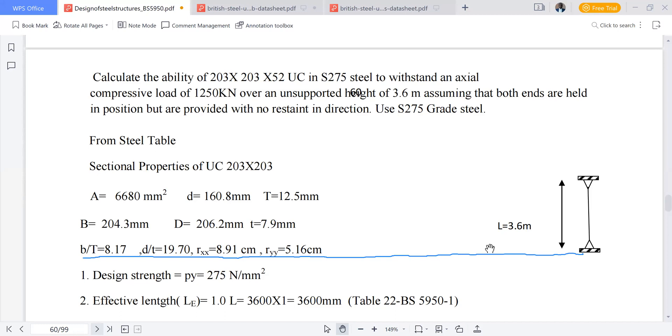Calculate the ability of a universal column in S275 steel to withstand an axial compressive load of 1250 kilonewtons over a supported height of 3.6 meters, assuming that both ends are held in position but are provided with no restraint in direction. Use S275 grade steel.